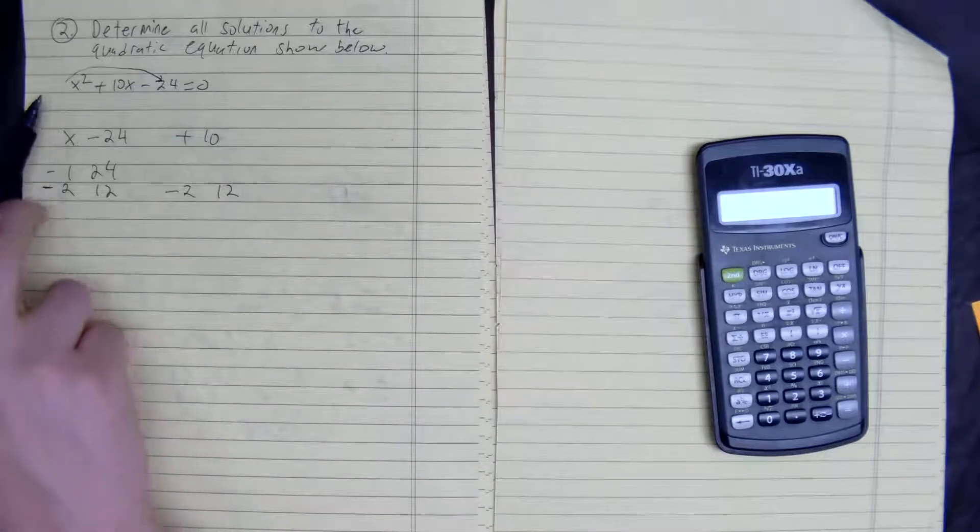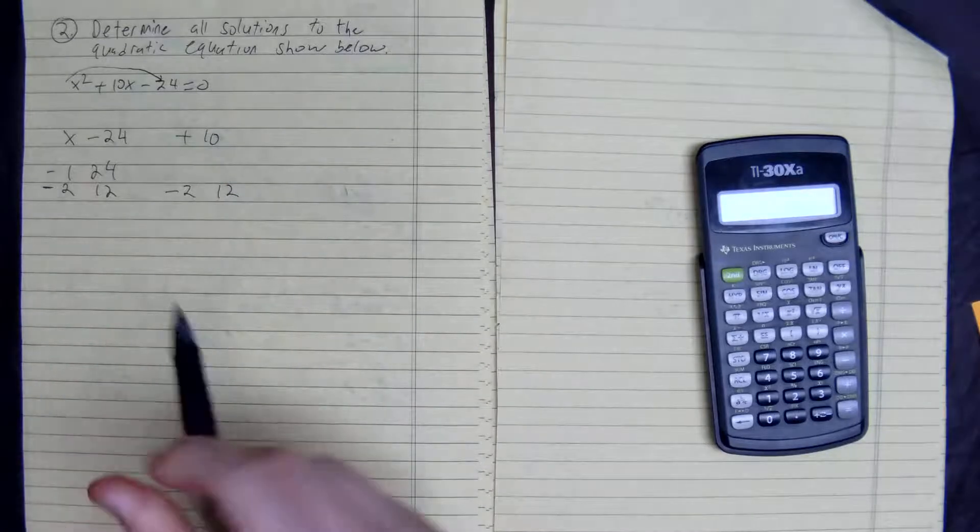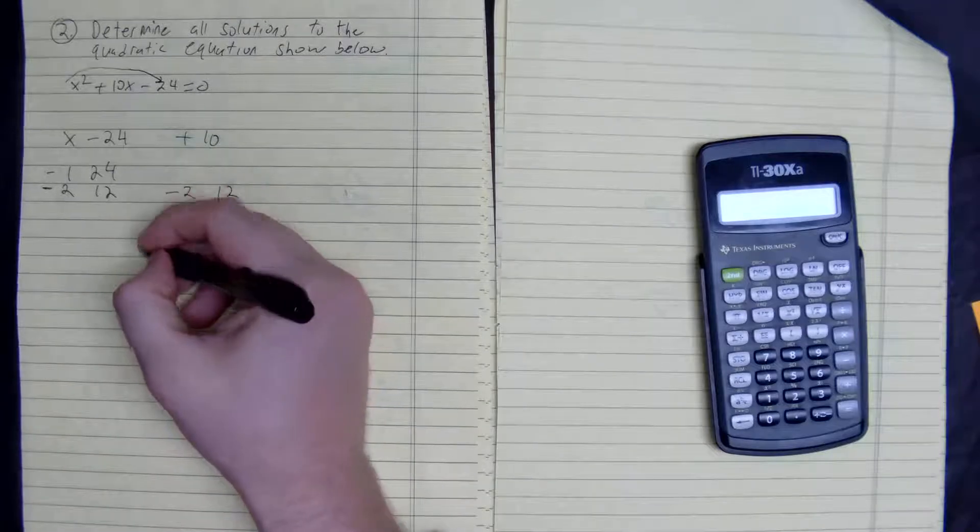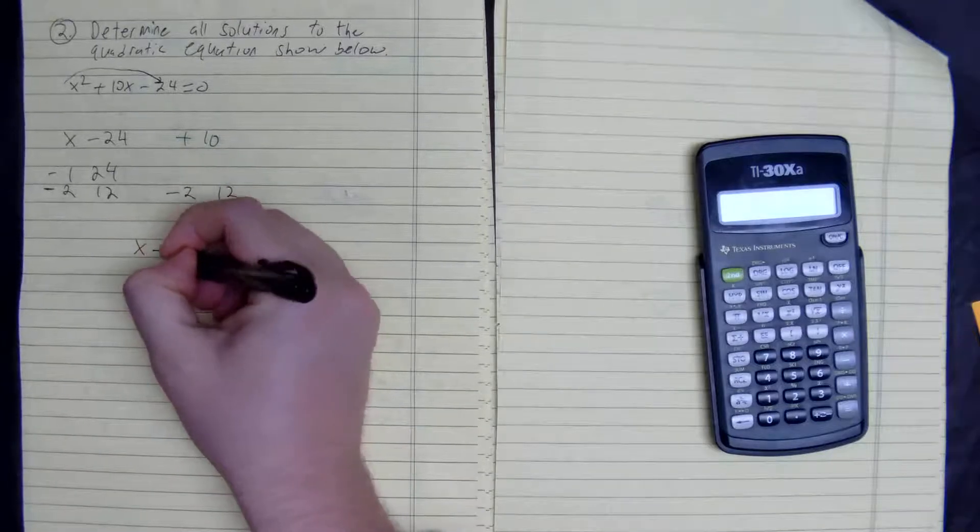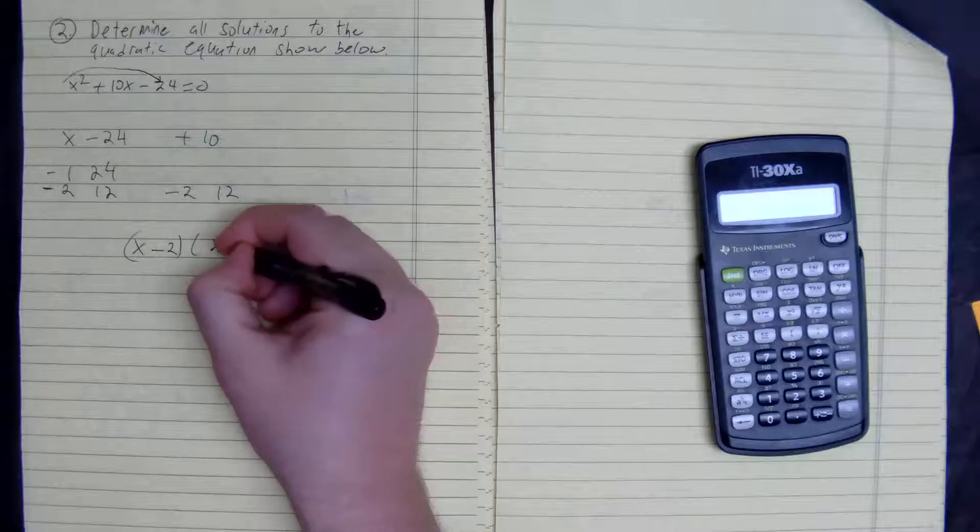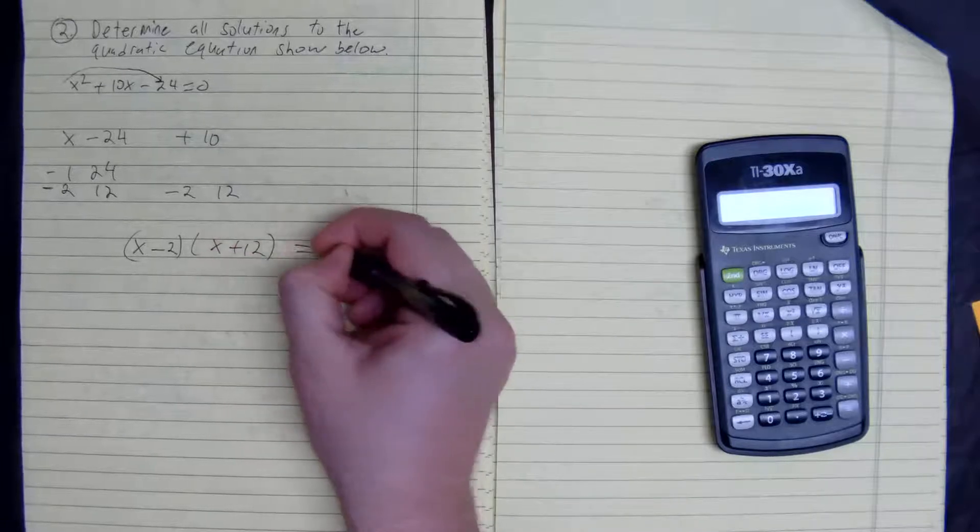So what we do, since our leading coefficient is 1, we can just factor it quickly, like so. X minus 2 times the quantity of X plus 12 is equal to 0.